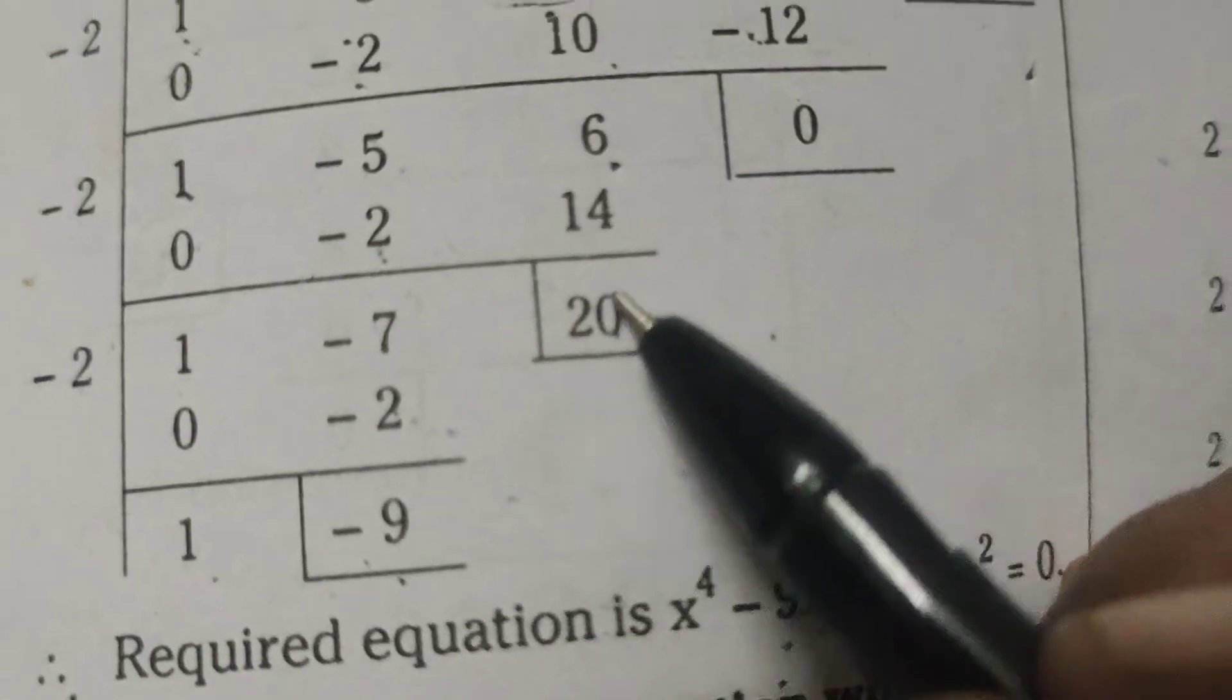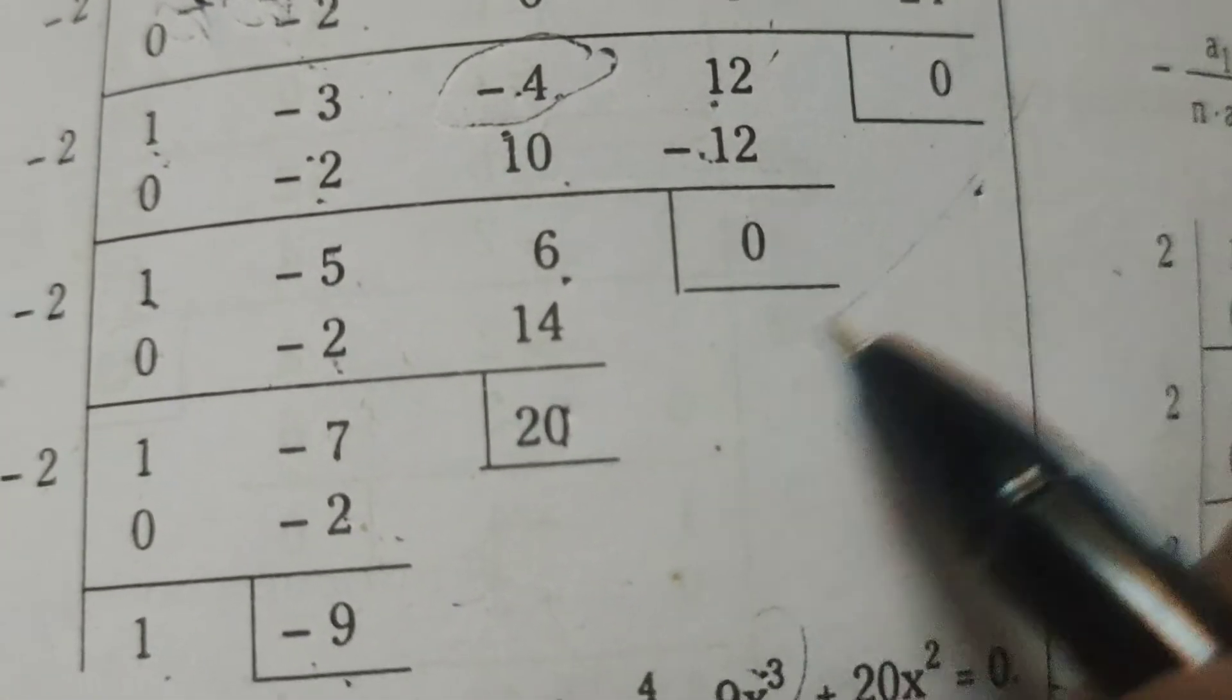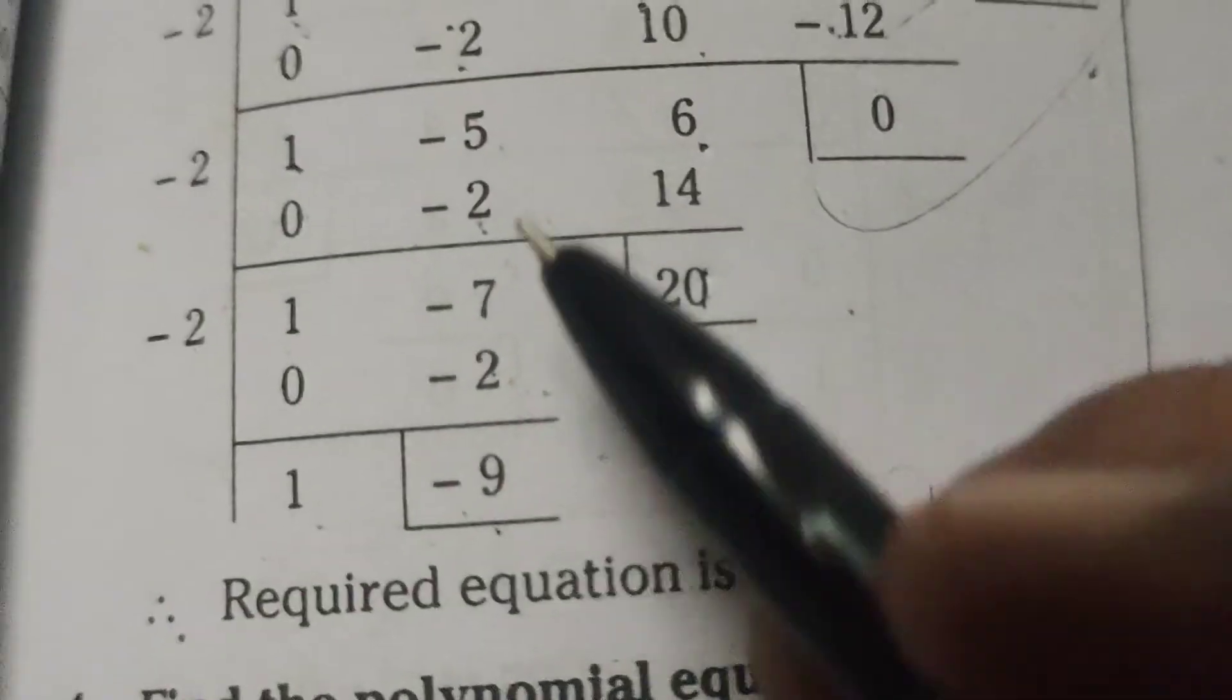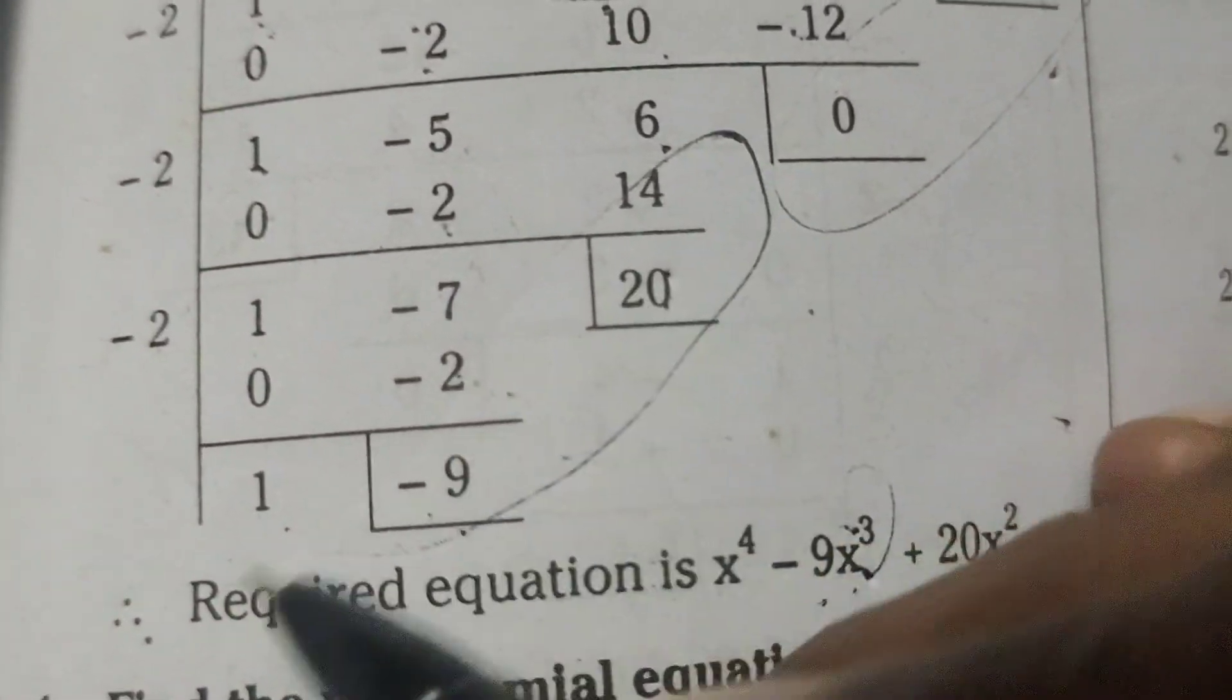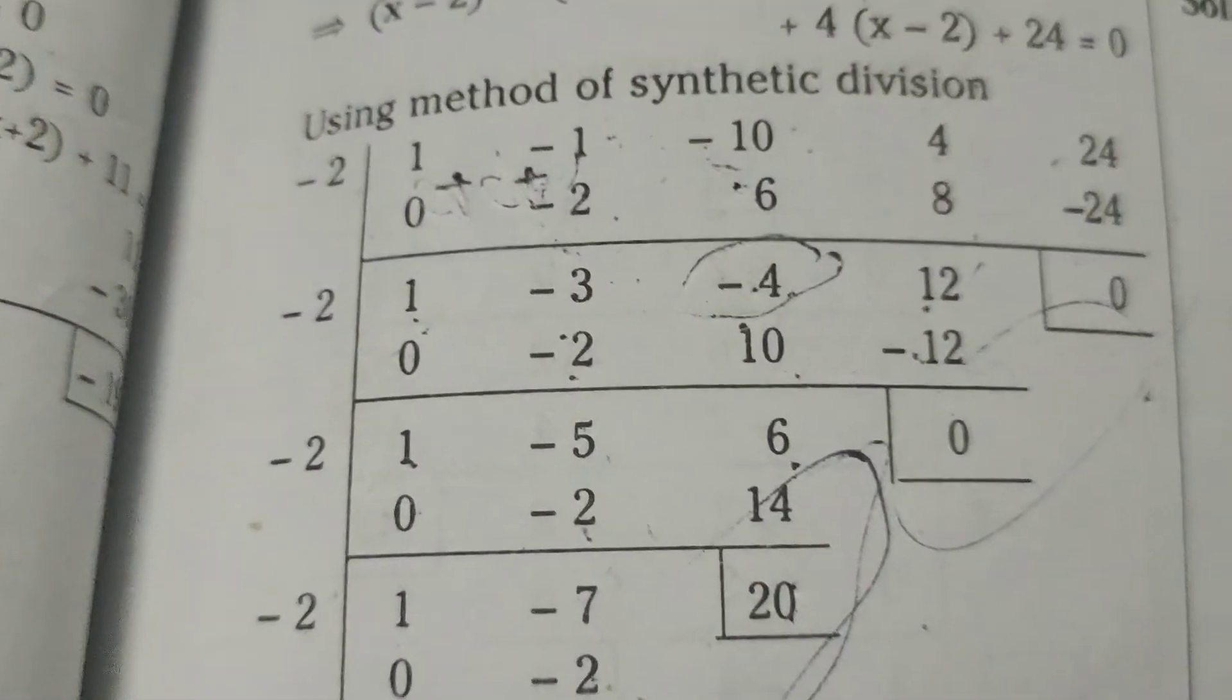So here -9x^3 plus 20x^2 equals to remaining terms of 0. Reminders only here in this arranged equation required equation here.